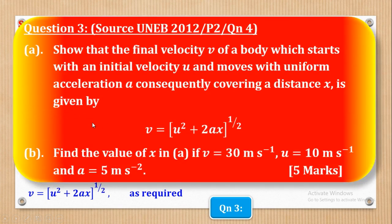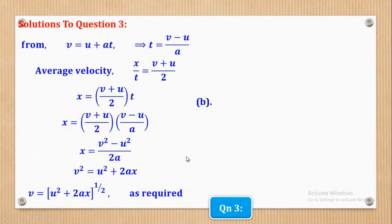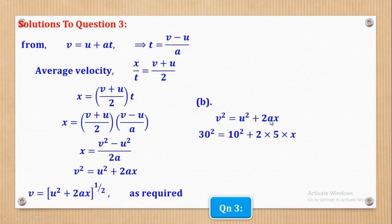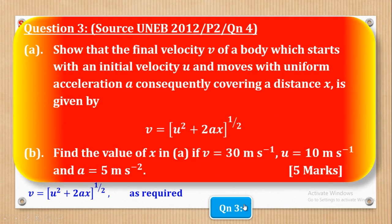Part B says: find the value of X in part A if V = 30 m/s, U = 10 m/s, and A = 5 m/s². Going back to the equation V² = U² + 2AX and substituting: 30² = 10² + 2(5)X. Simplifying gives 900 = 100 + 10X, so 800 = 10X, and therefore X = 80 meters.